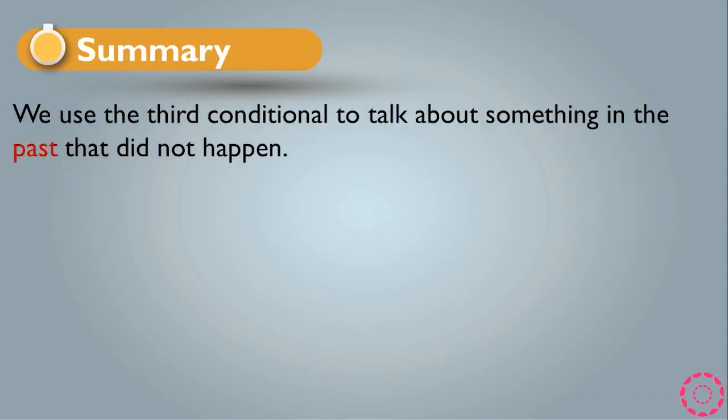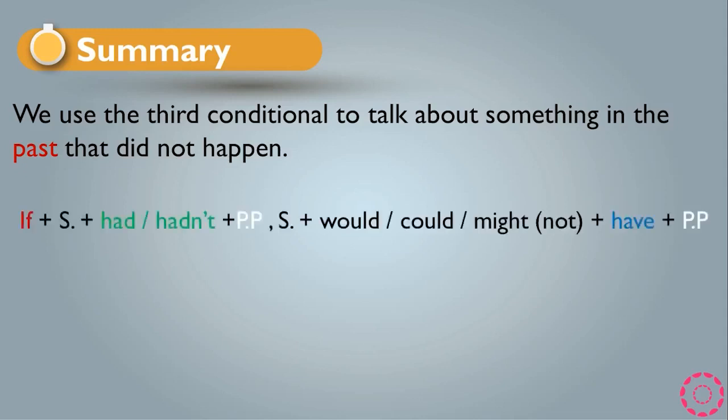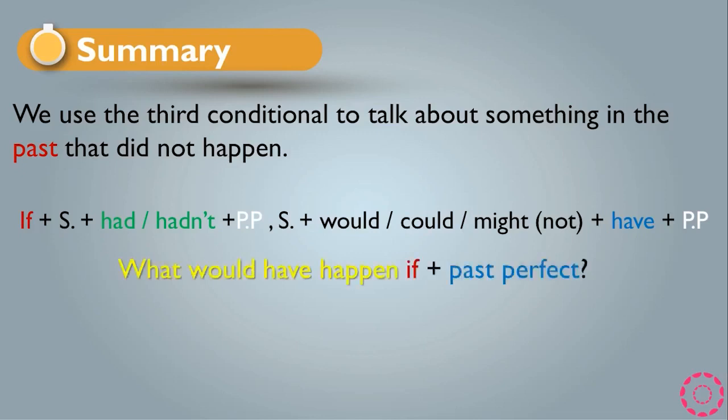Now we have the summary of the third conditional. We use the third conditional to talk about something in the past that did not happen. The first rule is used when we use if at the beginning, and for questions we use: what would have happened, plus if, plus past perfect, plus question mark.